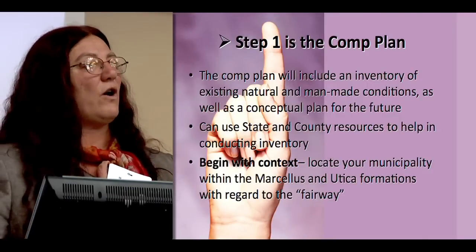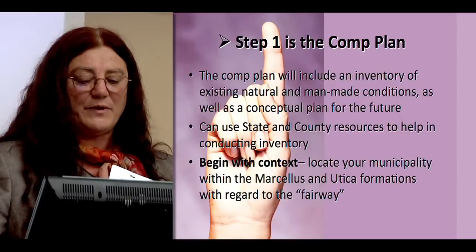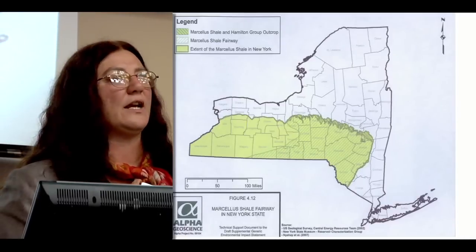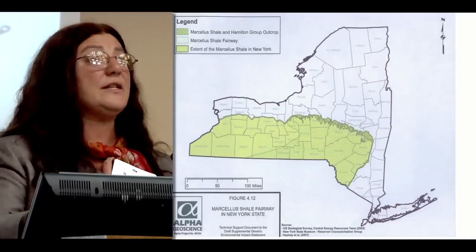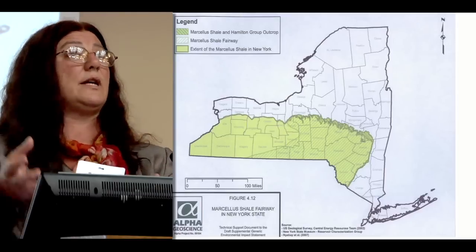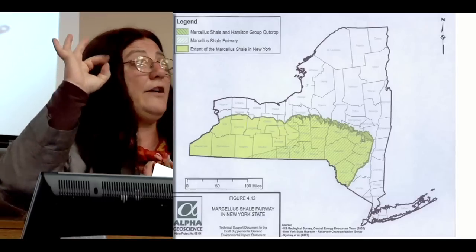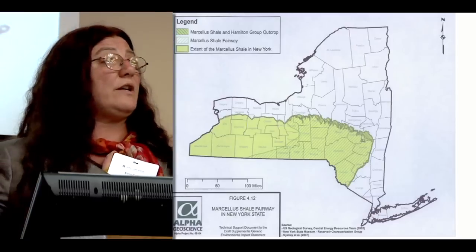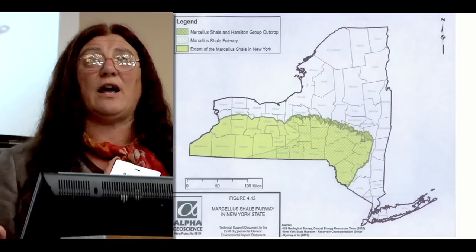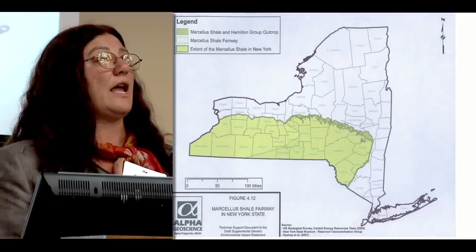You're going to begin with context, and context has something to do with timing. There is something called the Marcellus and Utica Fairway. The formation itself is vast — this is the Marcellus formation, right from the USGS, and it has no copyright, so you could take it right for your comprehensive plan at no cost. There is an area called the fairway, where geologists have determined they are most likely to get the most gas.